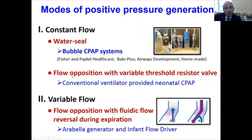Another form of constant flow system is flow opposition with a variable threshold resistor valve. This is what we do with ventilator CPAP. Here the patient's expiratory flow opposes a constant flow from the nasal prongs and generates the CPAP. In contrast, the variable flow system involves flow opposition with fluidic flow reversal during inspiration.